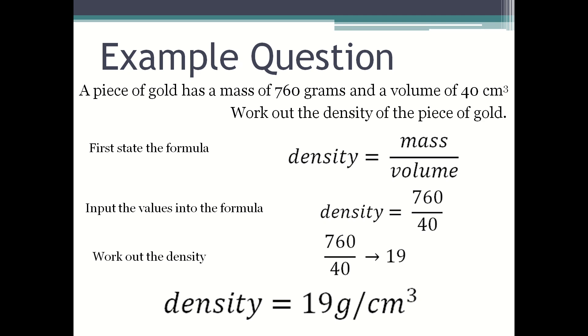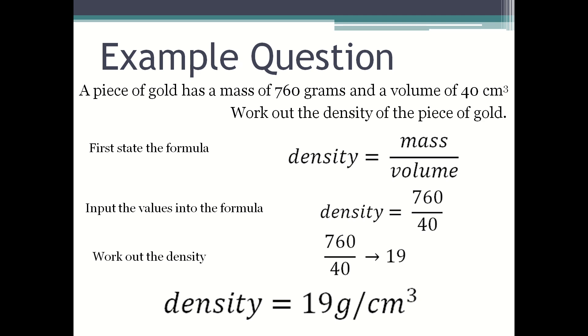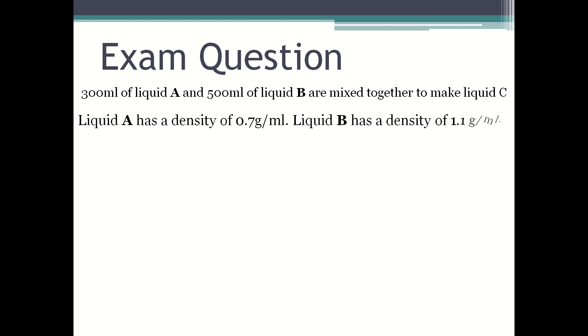Now we're going to look at an exam question. 300 milliliters of liquid A and 500 milliliters of liquid B are mixed together to make liquid C. Liquid A has a density of 0.7 grams per milliliter and liquid B has a density of 1.1 grams per milliliter. Work out the density of liquid C.